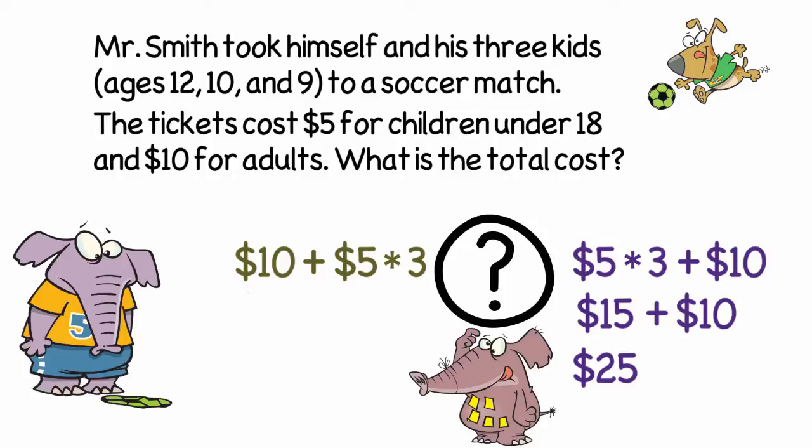So in both situations, we would do $5 times 3 first and then add $10 to that answer for a total of $25.